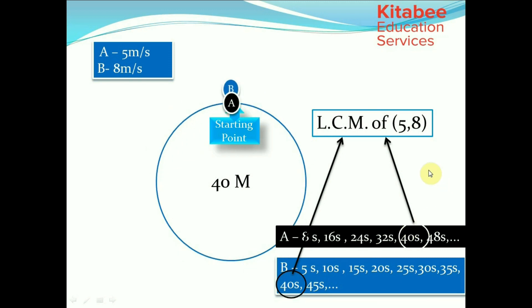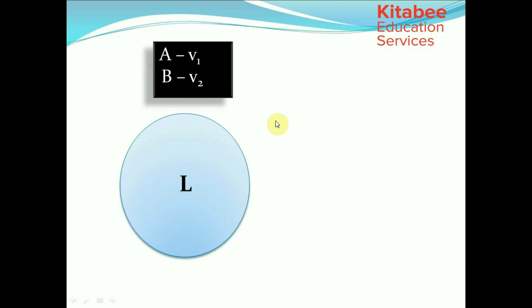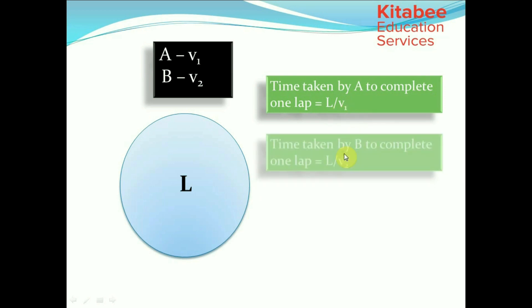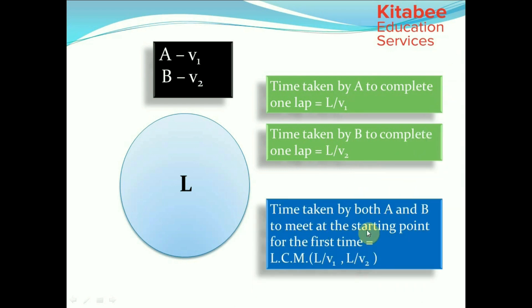In general, if there are two runners A and B with speeds V1 and V2 running on a circular track of length L, the time taken by A to complete one lap is L by V1 and by B is L by V2. The first instant at which both runners would be at the starting point is the LCM of L/V1 and L/V2.